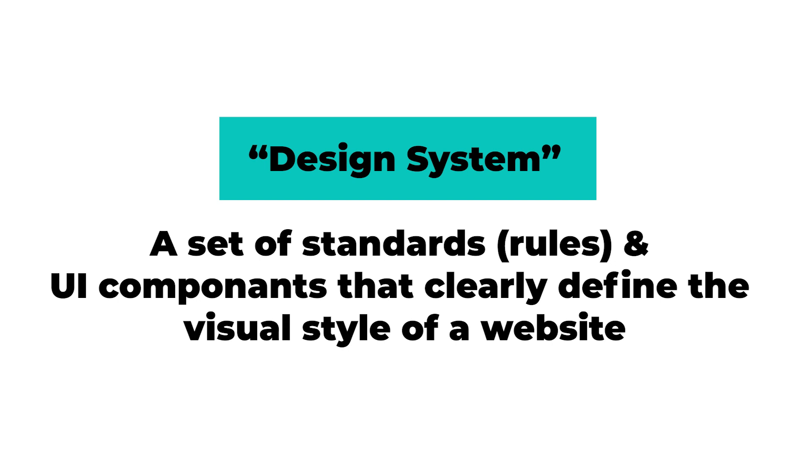Before we get into this, let me explain what a design system is. Essentially, a design system consists of a bunch of standards or UI components that clearly define the visual style of a website. By implementing a design system, a more cohesive and consistent design experience exists throughout the entire design, giving you not only an end product that looks fantastic but one that's very pleasing for the end user. A lot of designers completely disregard implementing any sort of design system, and no matter how simple the design is, you can end up with a website that looks very amateur. If your website looks amateur, businesses are not going to pay you the type of money you deserve.